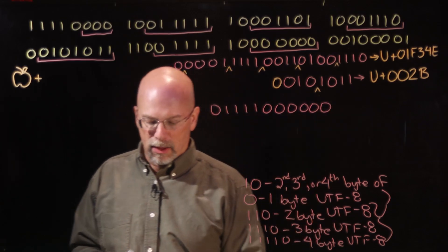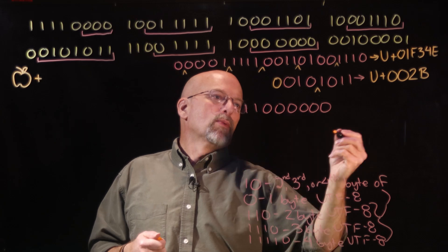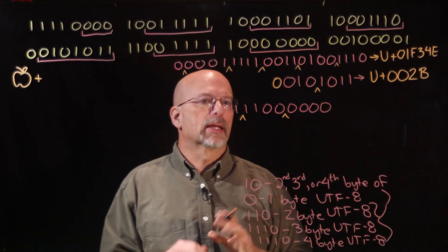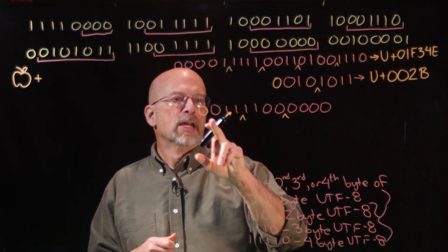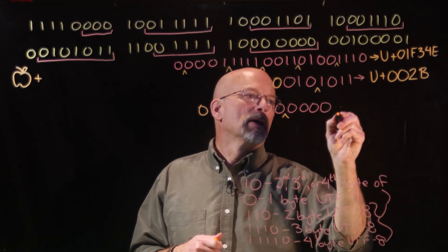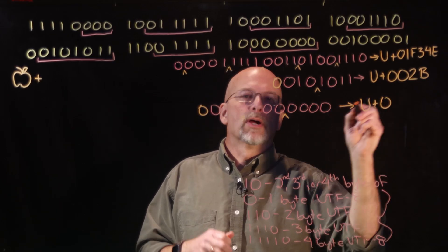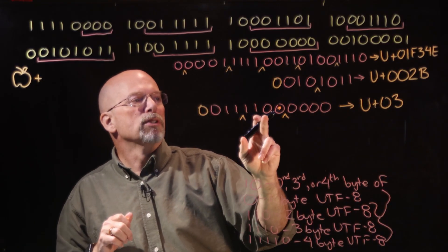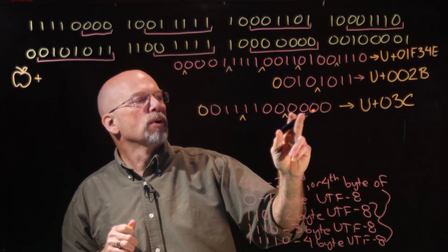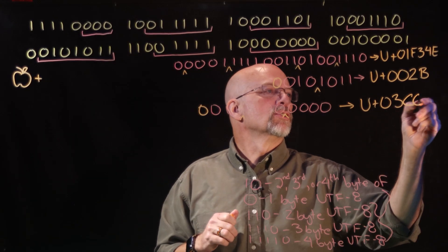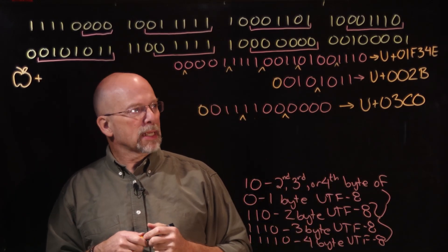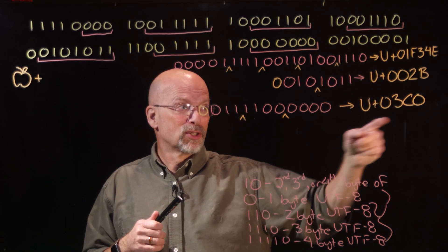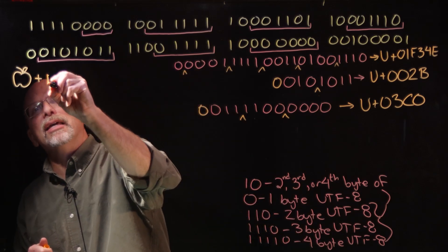Breaking those 11 bits into nibbles from the right, and adding a leading zero: we get 0, 3, C, 0. So the Unicode code point is U+03C0. A quick search confirms that U+03C0 is lowercase pi.